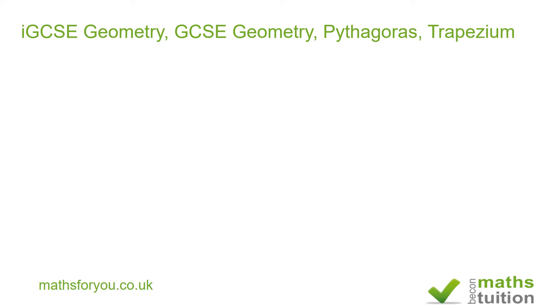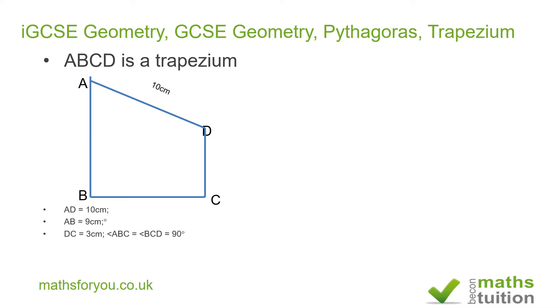ABCD is a trapezium. AD is 10 centimeters, AB is 9 centimeters, DC is 3 centimeters, and the angles at B and C are each 90 degrees. Calculate the length of AC and give your answer to 3 significant figures.